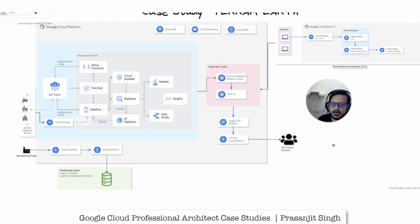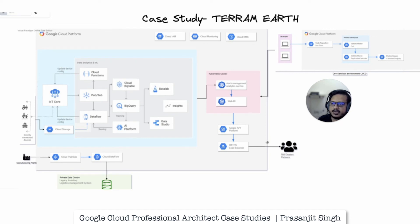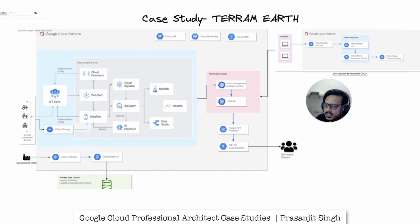So this is all about the TerramEarth case study and how it looks. The entire infrastructure, as you can see, is running on Google Cloud Platform. The security part is handled by Cloud IAM policies, we have Cloud Monitoring components, and we have Cloud KMS. Whatever questions you get around this case study can be answered using these components, but you will need to go in depth into all of these components and understand how they work. The purpose of this diagram is to help you visualize what the TerramEarth proposed solution looks like and what the moving parts are, so you can answer your exam questions better.